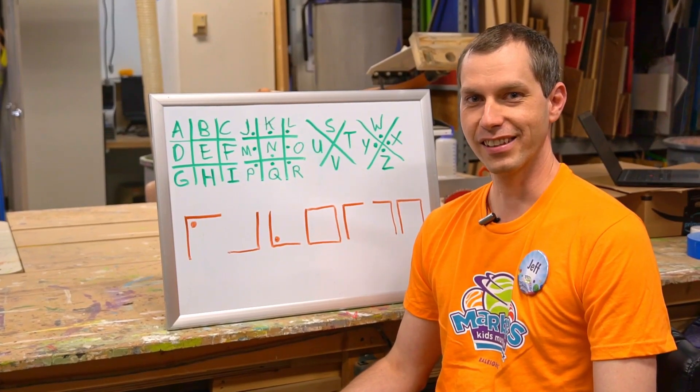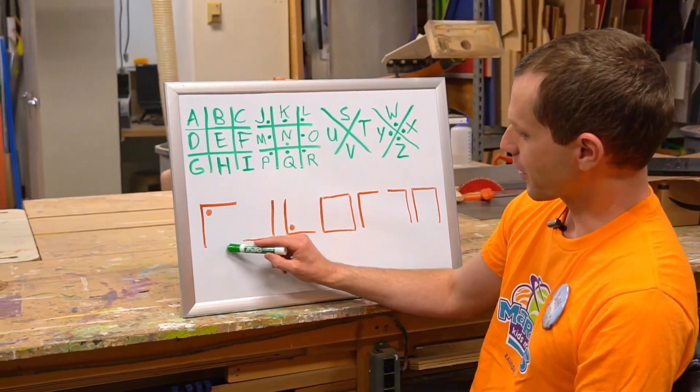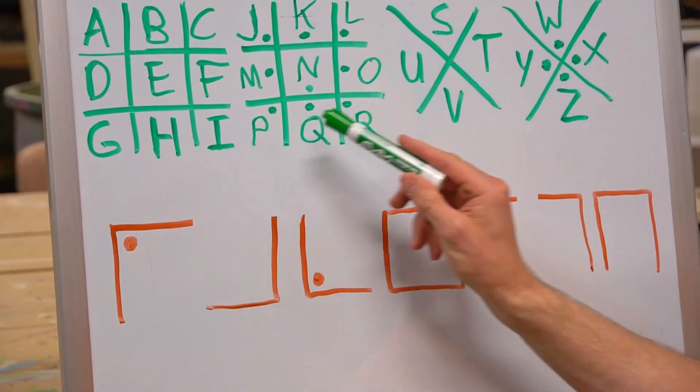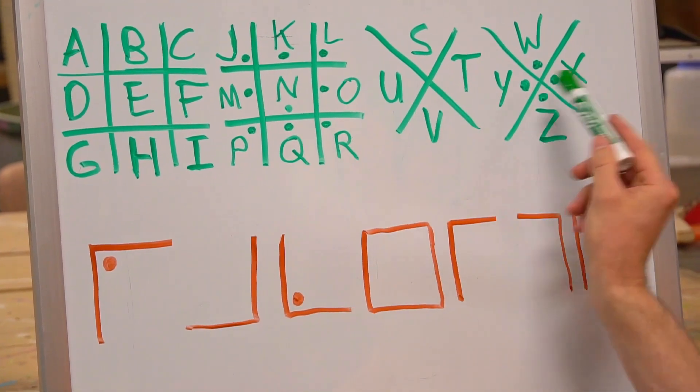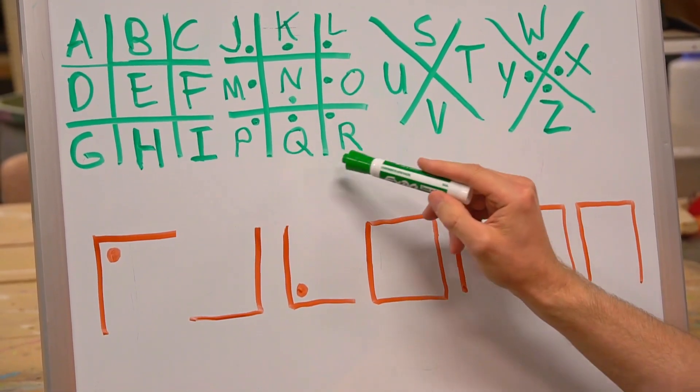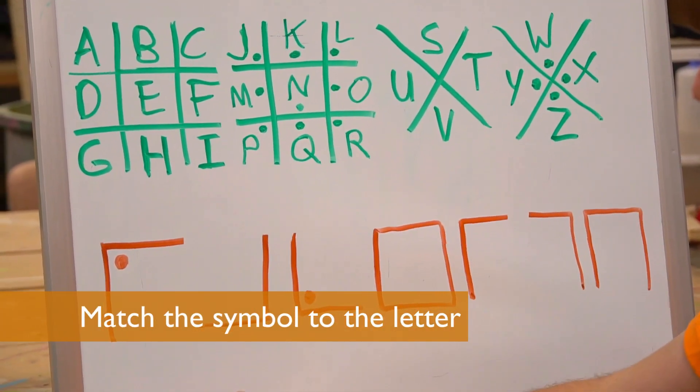Did you figure it out? If not, that's okay. We'll solve it together. Let's look at the first letter here. It's these two lines and this dot. So do we see that anywhere in this key? Let's see, the dotted ones are these two. Looks like this bottom corner here has these two lines and that dot. So let's write down an R.